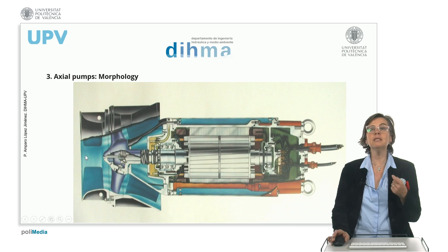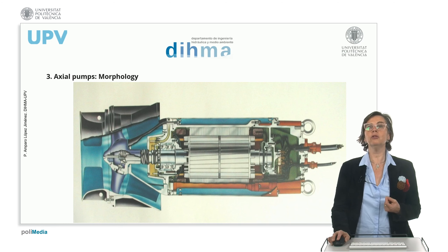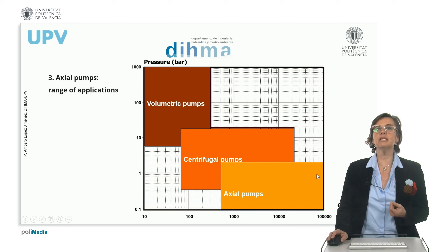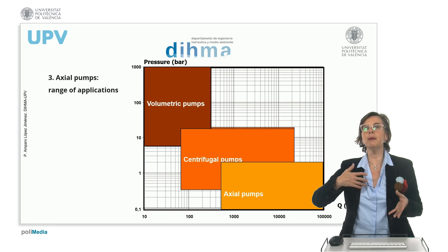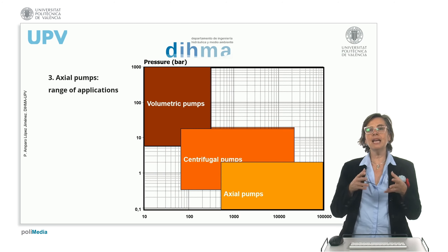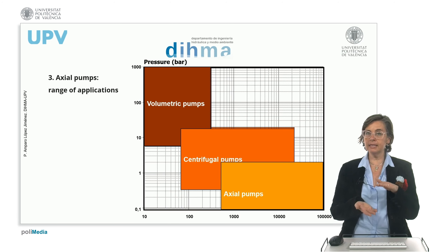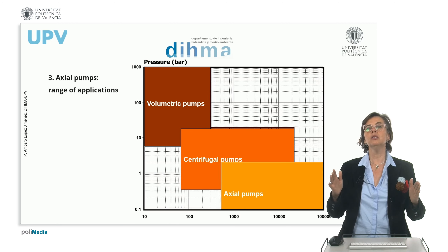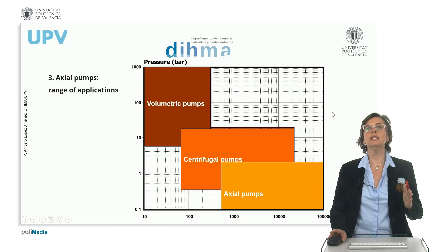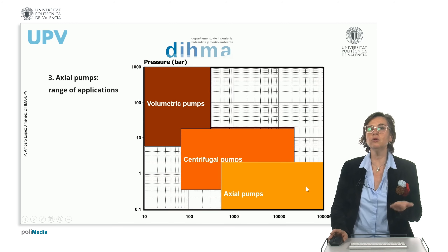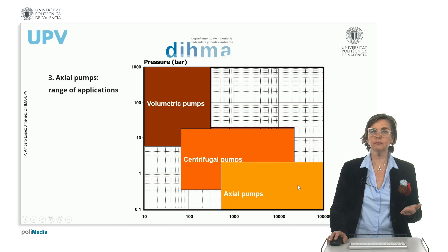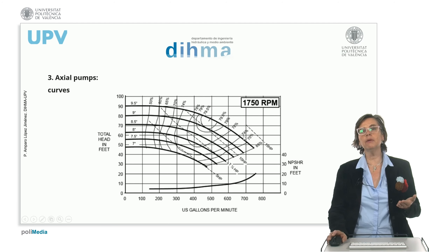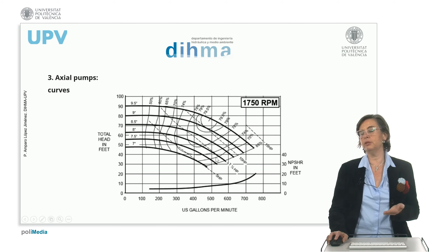The impeller is in the middle, giving impulse to the system. These machines are used in general to handle large flows because they have a high capability to move fluid, though they do not achieve very high heads. So in terms of flow versus pressure, they operate at low pressure and high flow. They are used in a wide range of applications with clean and dirty waters or other fluids. This describes the general shape of the characteristic curve for this type of machine.